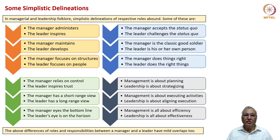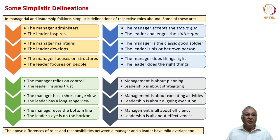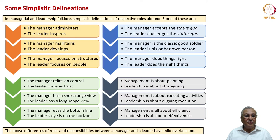The manager accepts the status quo — if the leader says this is what we need to do, the manager takes it as the Magna Carta. Whereas the leader challenges the status quo, disrupts the organization and tries to develop a new one. The manager is the classic good soldier, whereas the leader is their own person. The manager does things right — that is, efficiently — whereas the leader does the right things, that is effectively. The manager relies on control due to day-to-day performance accountability, whereas the leader inspires trust and believes people will deliver.